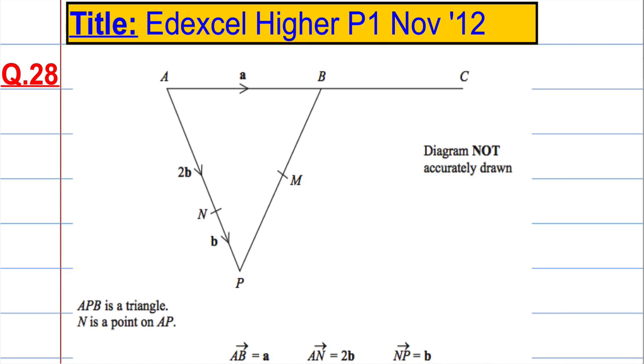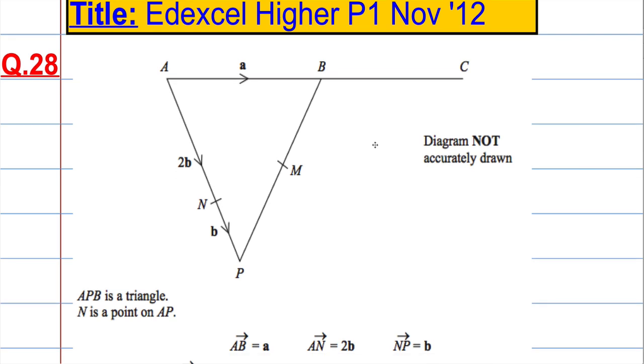Okay, here we go, question 28, the final question in the paper, and it's a vectors question, and can be deemed quite a tricky one.